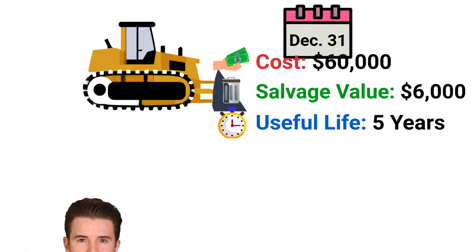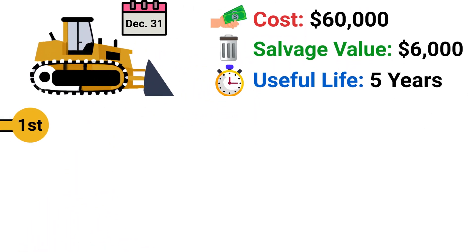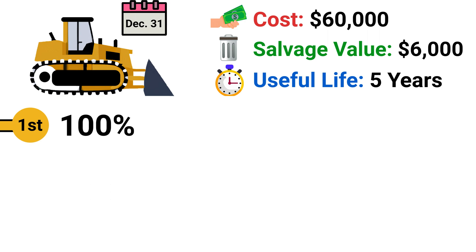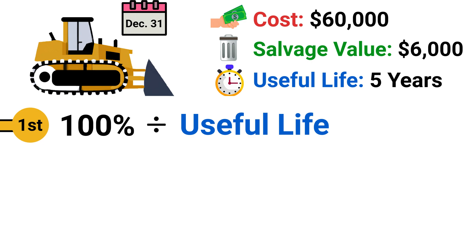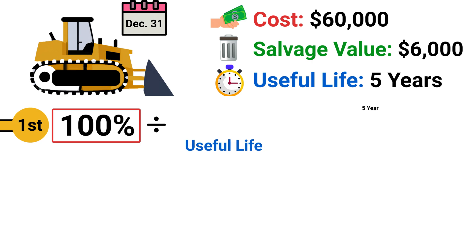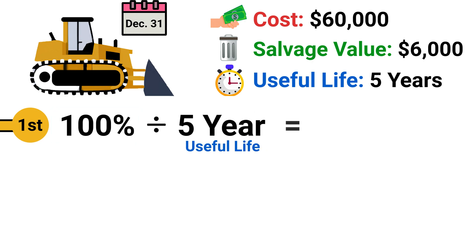First, we determine the asset's straight-line depreciation rate, which is computed as 100% divided by the useful life. For our example, we take 100% divided by the 5-year useful life to get 20% per year.